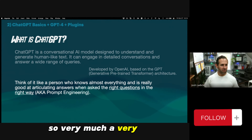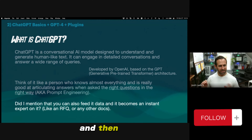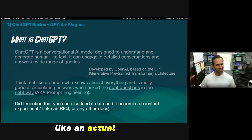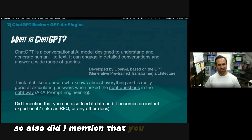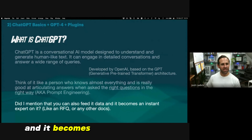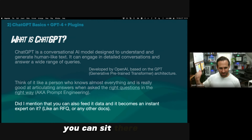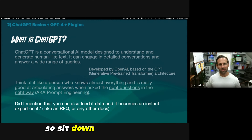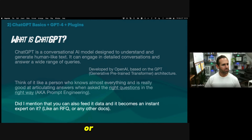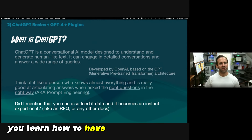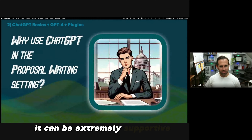Think of your best assistant ever, and then give them photographic memory and make them insanely quick. You can also feed it data and it becomes an instant expert on that data. For example, an RFQ — 90 pages — you can feed that PDF right into ChatGPT. It'll basically memorize it, and then you can ask questions. If you learn how to have a good conversation with ChatGPT, it can be extremely supportive.